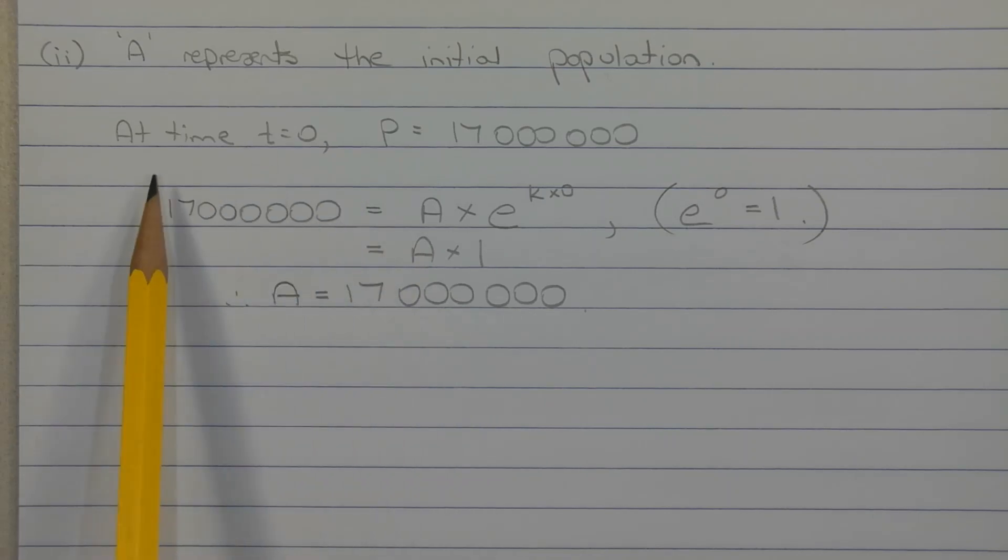If we substitute 17 million for P in the equation P equals A times E to the power of KT, noting that T is equal to 0, we get 17 million equals A times E to the power of K times 0. K times 0, of course, is 0, and E to the power of 0 is equal to 1. So 17 million is equal to A times 1, which means A is 17 million.